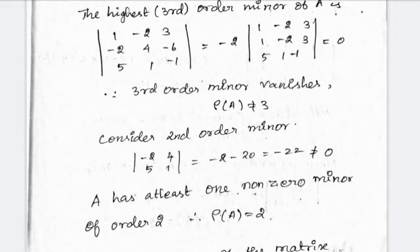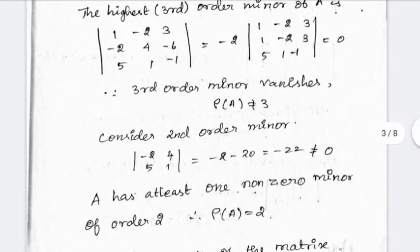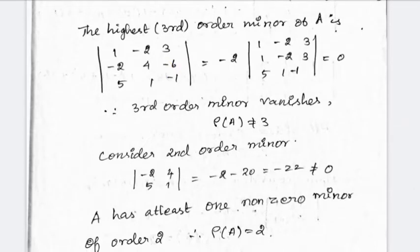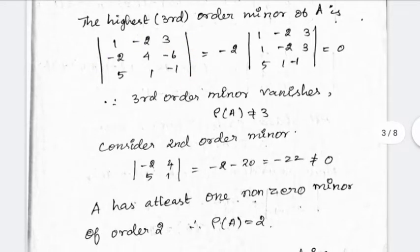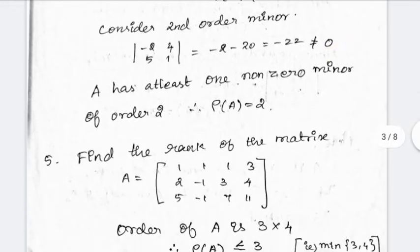This value is zero. For the second-order minor, rank is 2; for the third-order minor, rank would be 3. If all second-order minors are also zero, then we use first-order minors. If all second-order minors are zero, the rank is 1 based on first-order minors. So, looking at the rank of the matrix, the rank is determined by the highest-order non-zero minor. Let's see the next example.